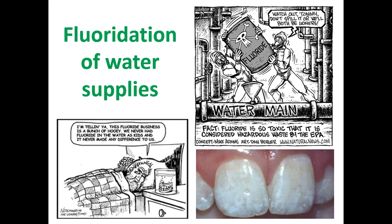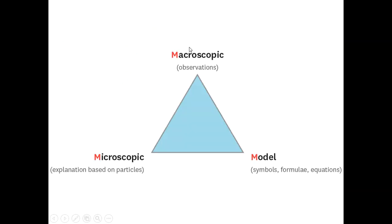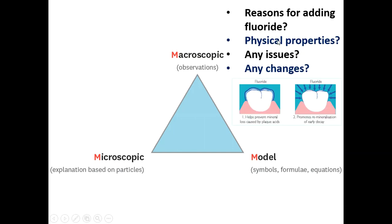So you again need to look at the macroscopic, microscopic, and model level. So the reasons for adding fluoride, physical properties, what issues can arise from using fluorides. You can touch on mass medication and so on, but focus also on the chemistry of it and what changes have been made.